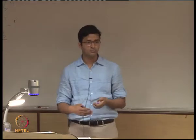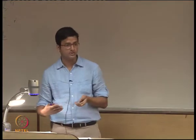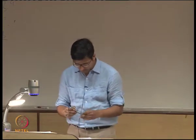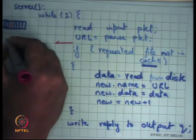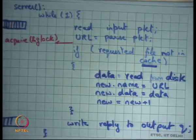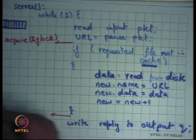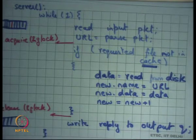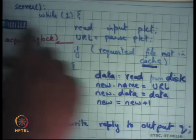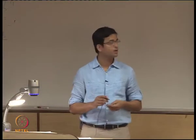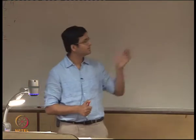We want to use locks for mutual exclusion. One approach: acquire a global lock and release it to protect the entire cache. This will take care of concurrent access to the cache, but not concurrent accesses to the input and output queues. Let's focus on the shared concurrent access to the cache first.